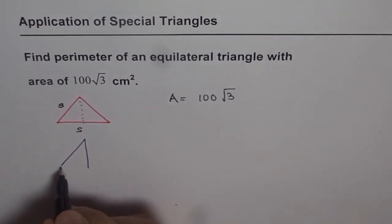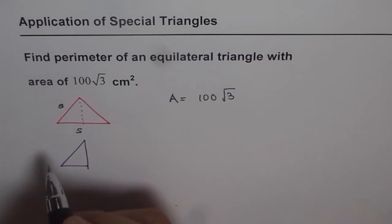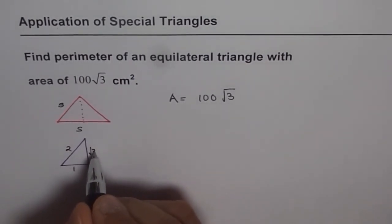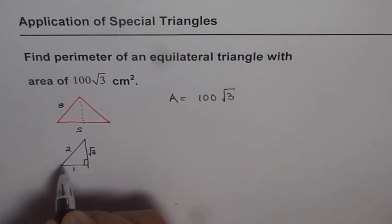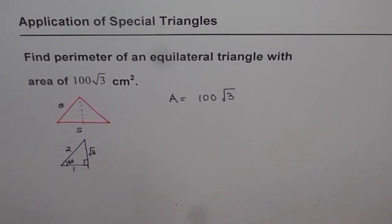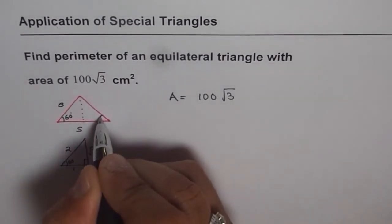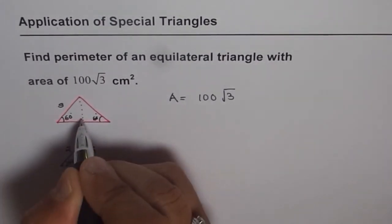In special triangles, we know if the sides are 2, 1, and √3, we have these angles as 60, 30, and 90. We do have 60 degree angles here and here. That is 90 degrees.